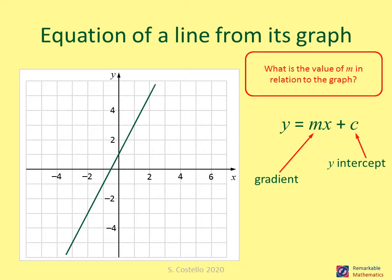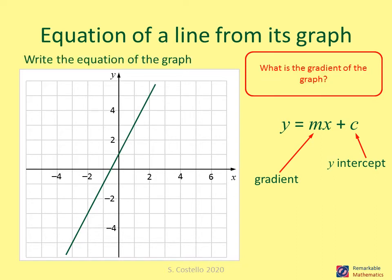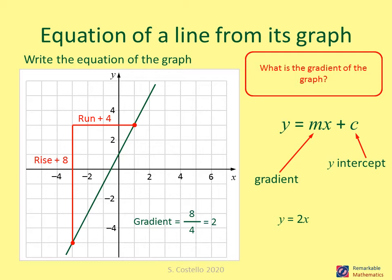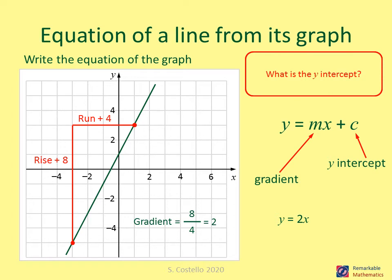If we have a line on a graph, to write its equation we first find the gradient by picking two points. Here we have a rise of eight and a run of four, giving a gradient of eight over four which simplifies to two. So the first part is y equals 2x. The y-intercept is where the line crosses at y equals 1, so the complete equation is y equals 2x plus 1.